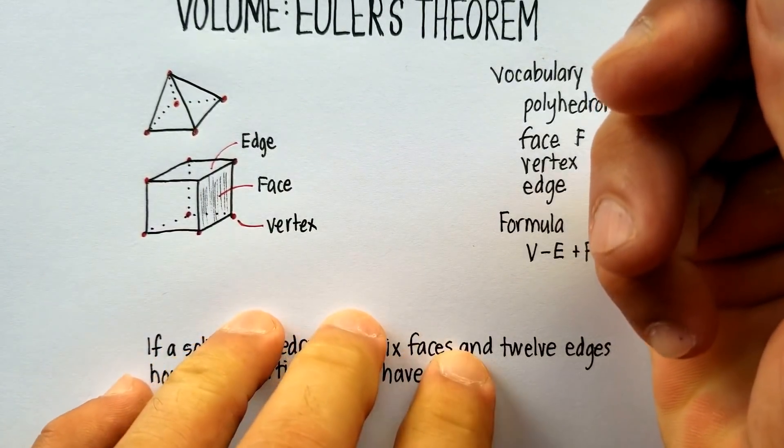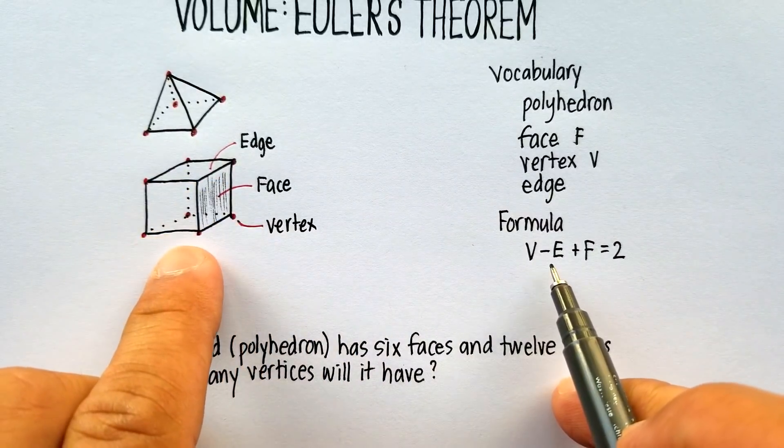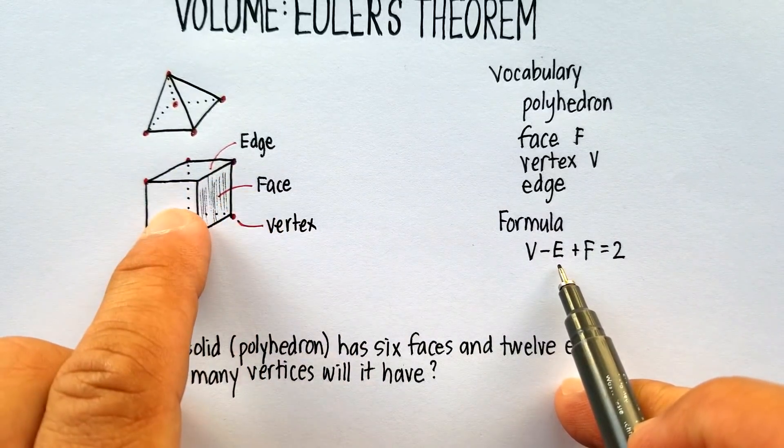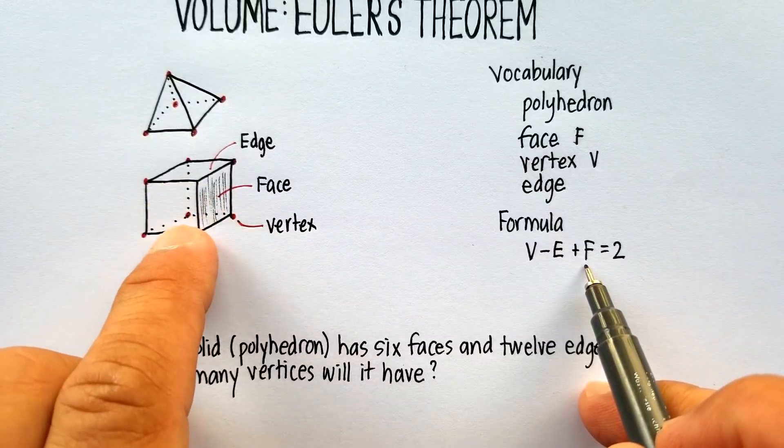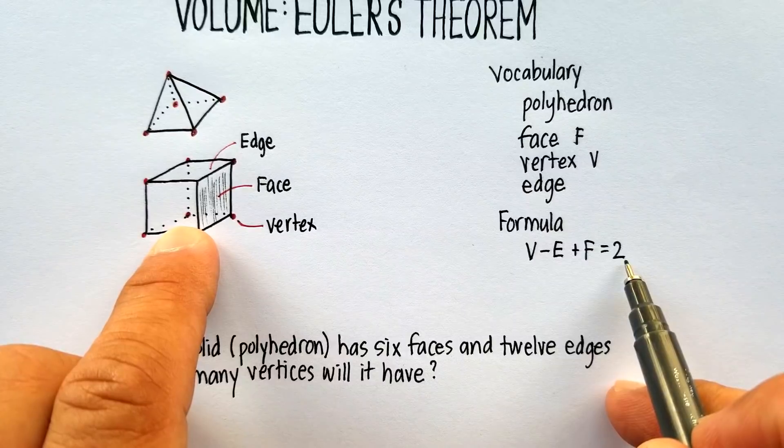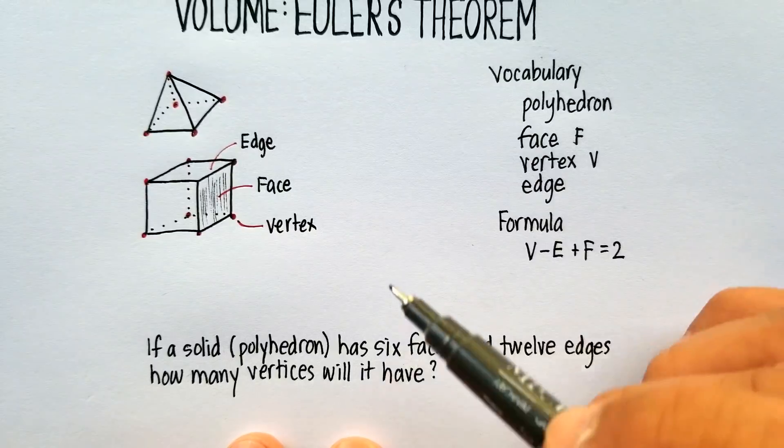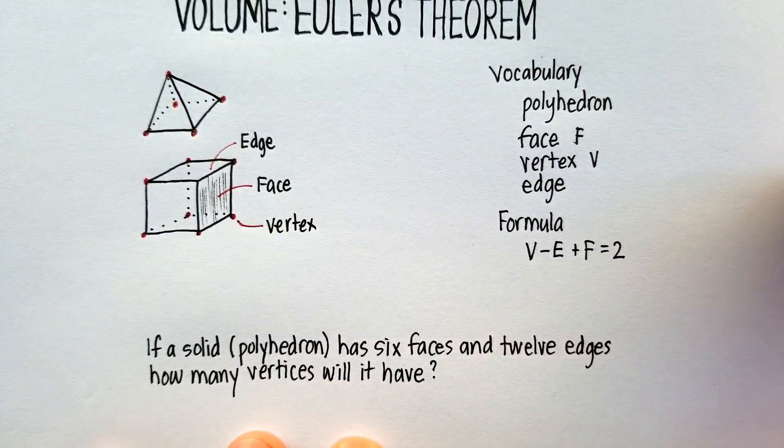Now, Euler's Theorem, again, is very specific. It says if you take the number of vertices, subtract the number of edges, add the number of faces, you will always get two. Now, let's try a problem and see if we can do it, and then we'll go back and count one of these and see if it actually works.